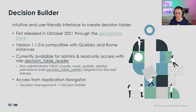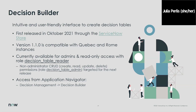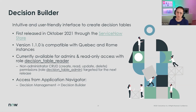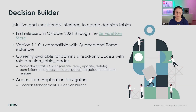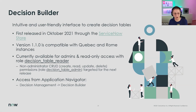Julia, it's available to all customers, correct? Yes, that's correct. The current version — 1.1.0 — is compatible with Quebec and Rome instances, so you don't have to wait for upgrading to Rome. It's currently available in your instances for admins, with read-only access via the decision table reader role, accessed through the application navigator under Decision Management > Decision Builder.